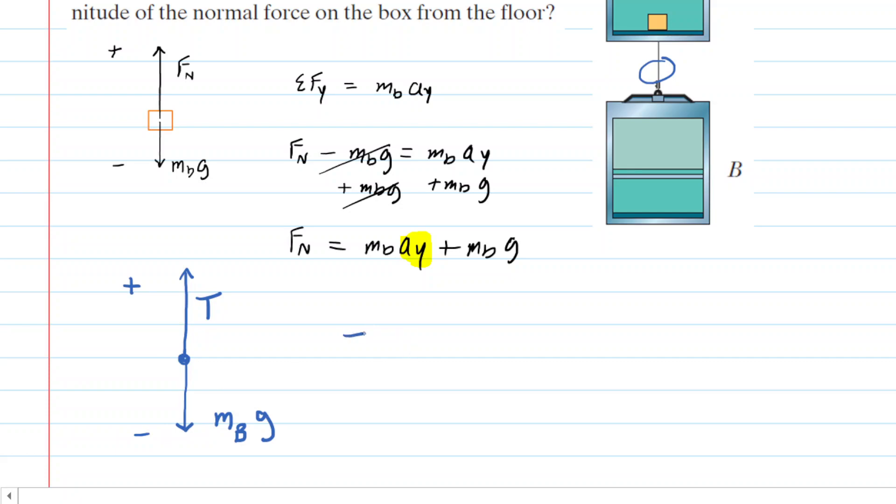We can apply Newton's second law one more time so we'll take the positive tension, we will subtract the gravitational force acting on cab B, and then we will set that equal to the mass of cab B times the acceleration of cab B.